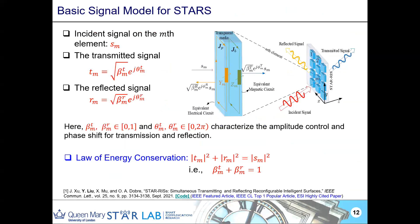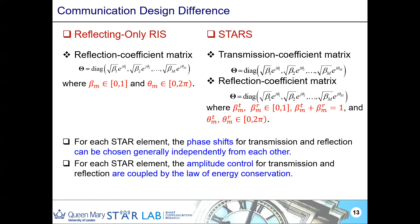Now let's move to the signal model. We have the transmit signal, incident signal, transmitted signal, and reflected signal. The key difference between STARS and RIS is that STARS must obey the law of energy conservation — we need to do power splitting between transmission and reflection. For STARS elements, the phase shifts for transmission and reflection can be chosen independently from each other, but for each element, transmission and reflection are coupled by the law of energy conservation.